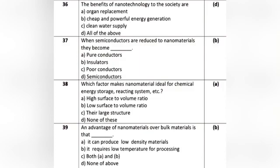Question 14: Which factor makes nanomaterials ideal for chemical energy storage and reacting systems? Option A: high surface to volume ratio. Option B: low surface to volume ratio. Option C: their large structure. Option D: none of these. The correct answer is Option A: high surface to volume ratio.